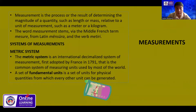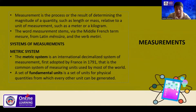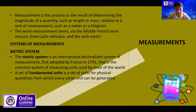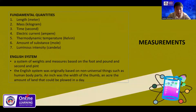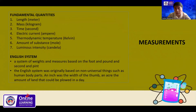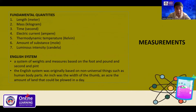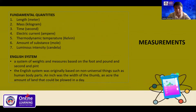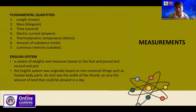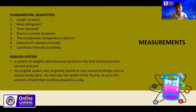A set of fundamental units is a set of units for physical quantities from which every other unit can be generated. We also have what we call the fundamental quantities: length in meter, mass in kilogram, time in second, electric current in ampere, thermodynamic temperature in kelvin, amount of substance in mole, and luminous intensity in candela.